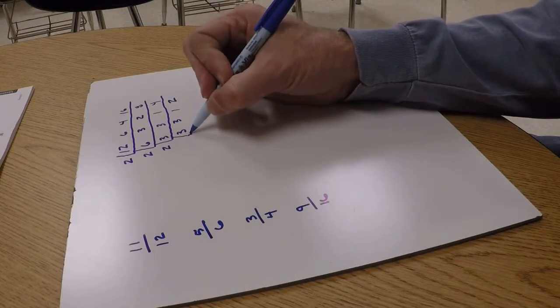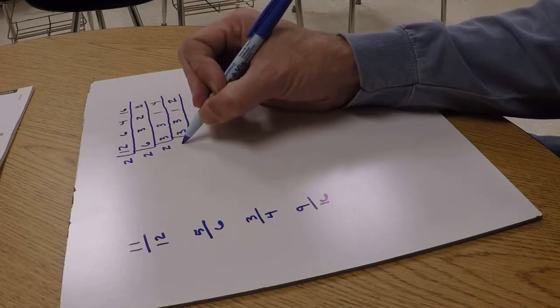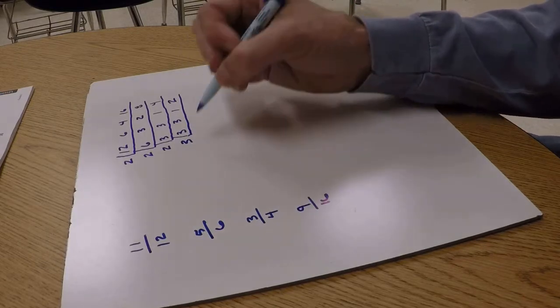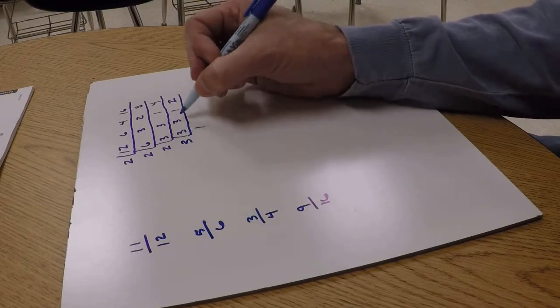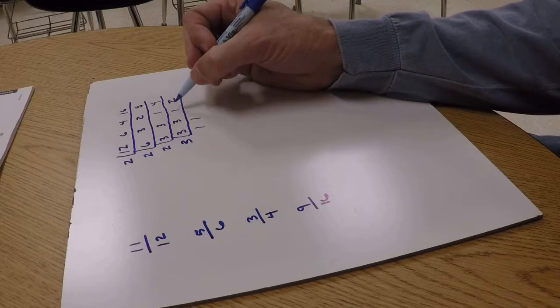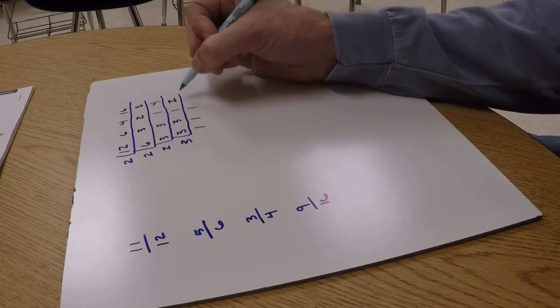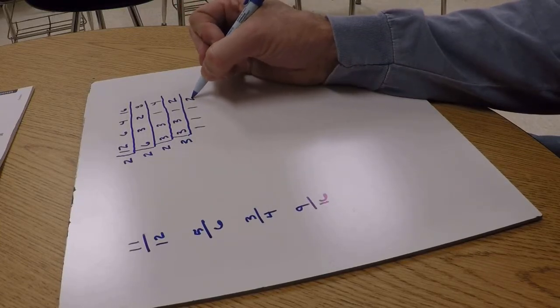And in order to do that, I'm going to do it by 3. 3 will go into 3 one time. 3 will go into 3 one time. Won't go into 1 evenly, just bring that down. Won't go into 2, so just bring that down.